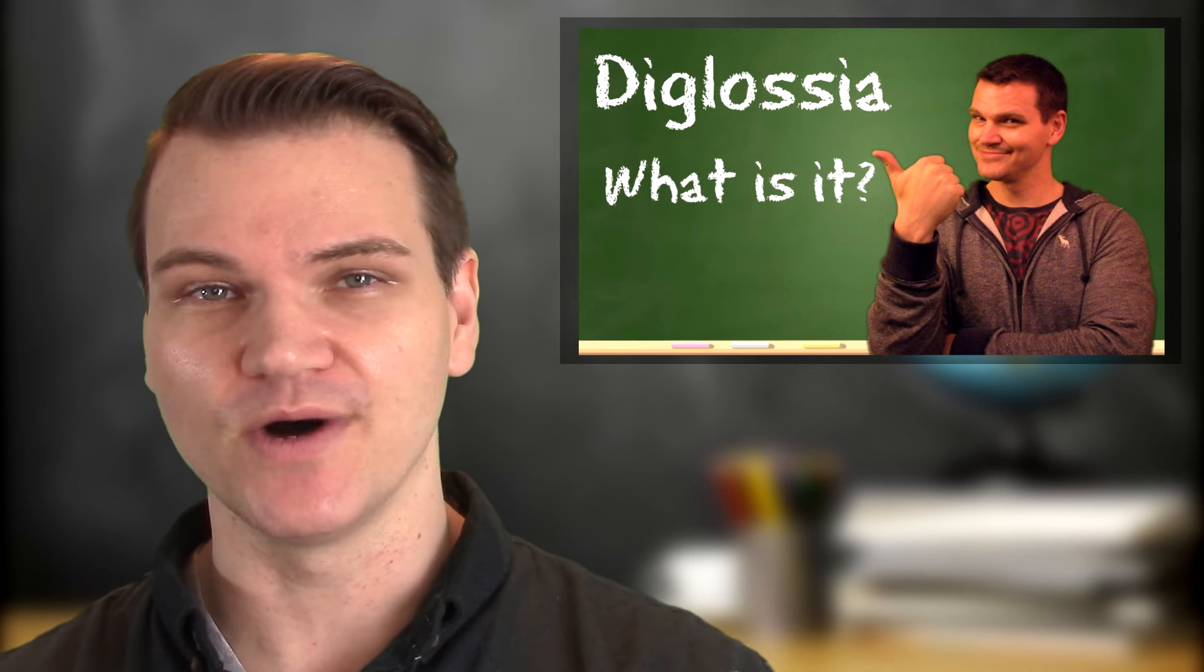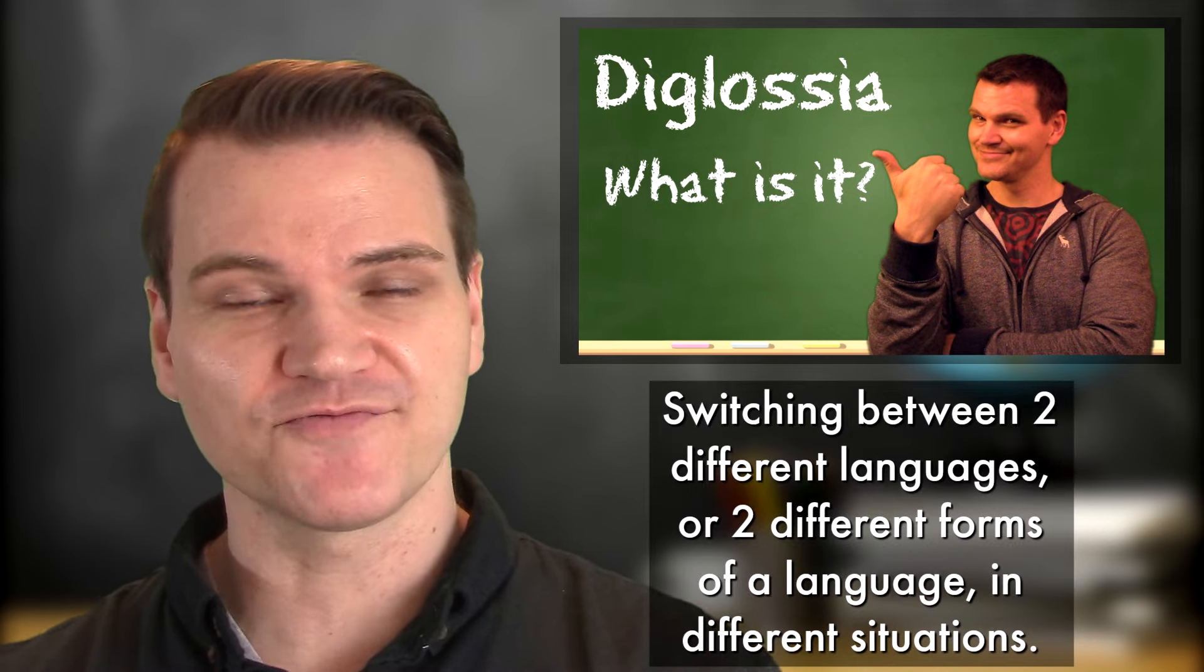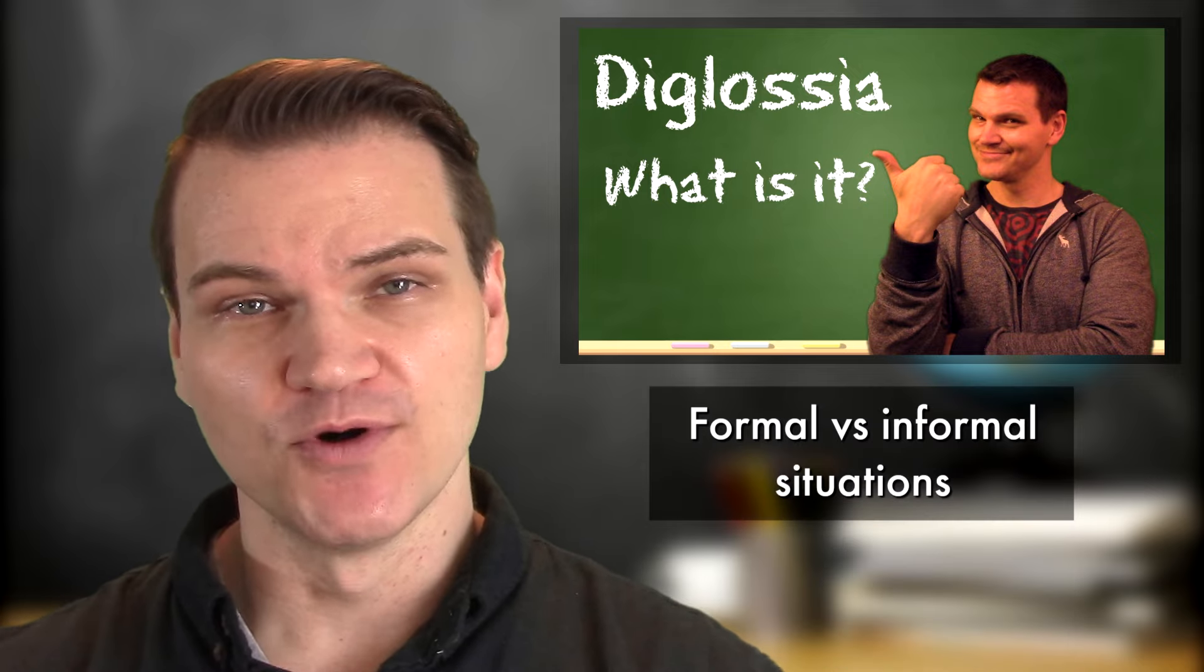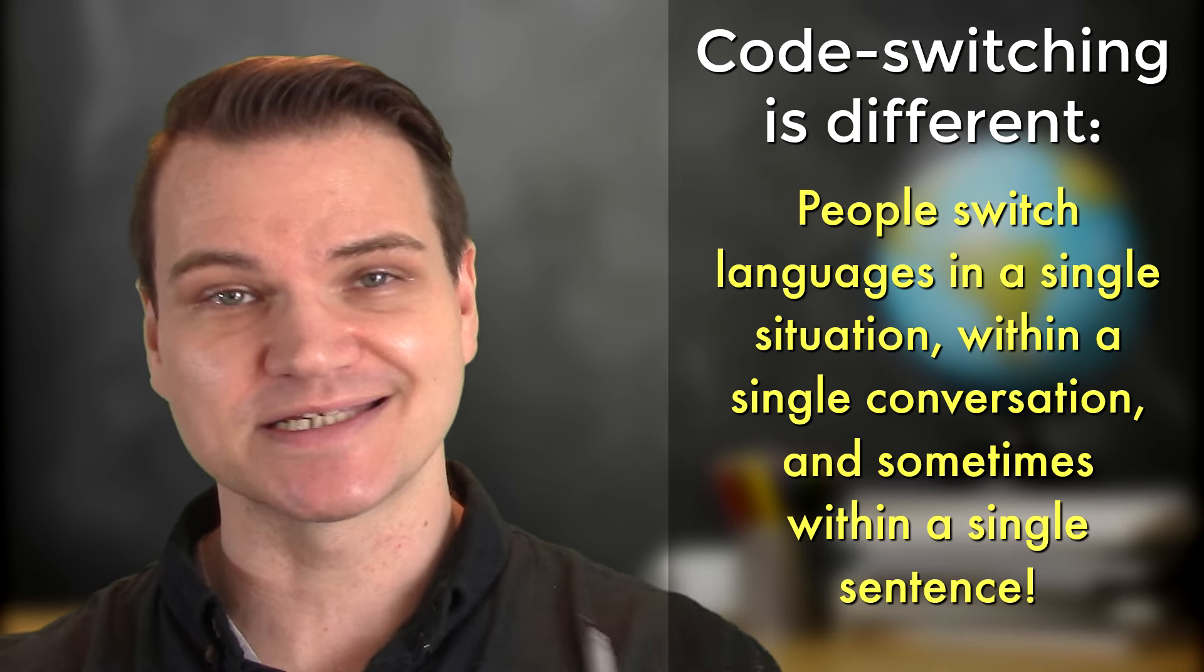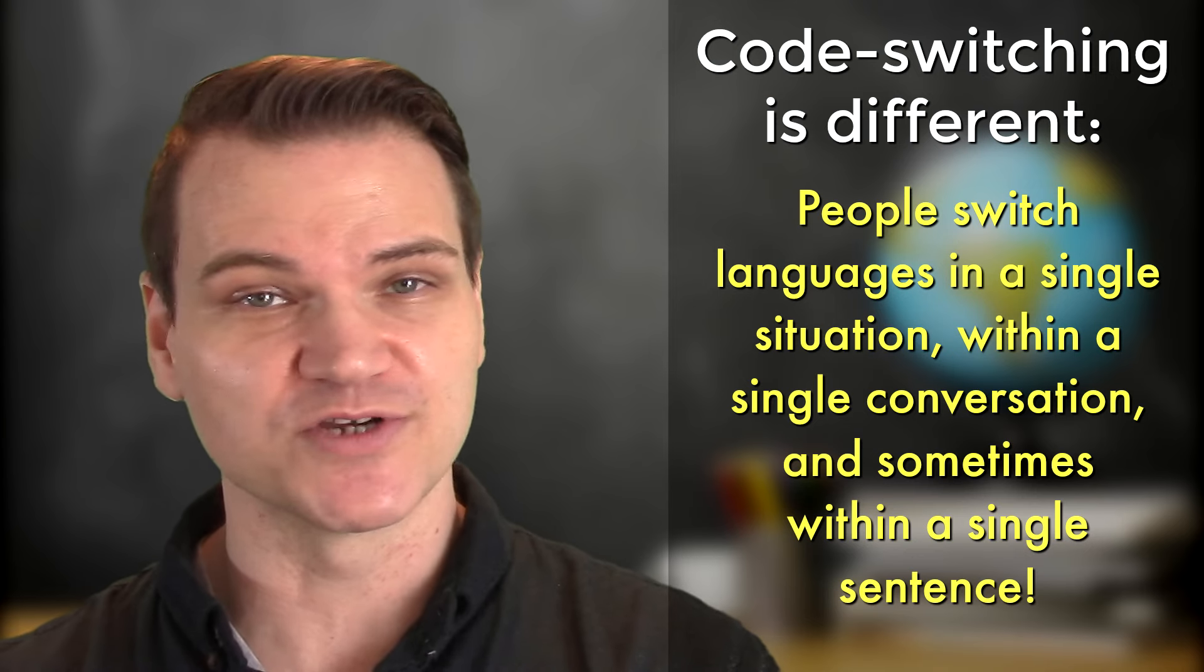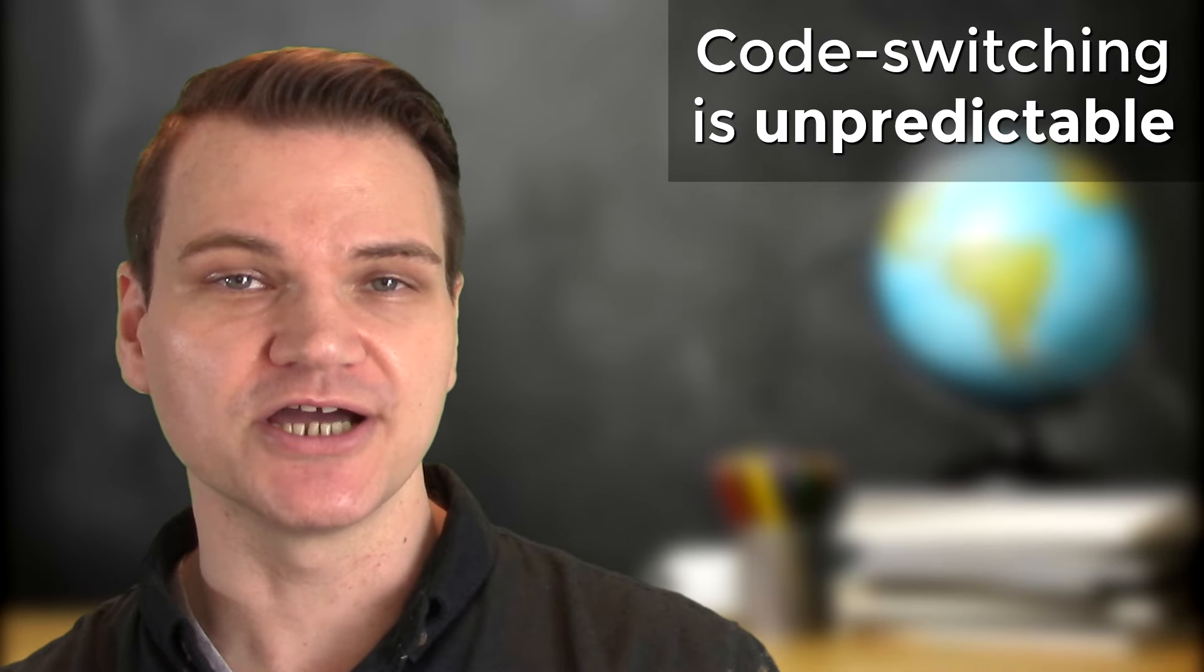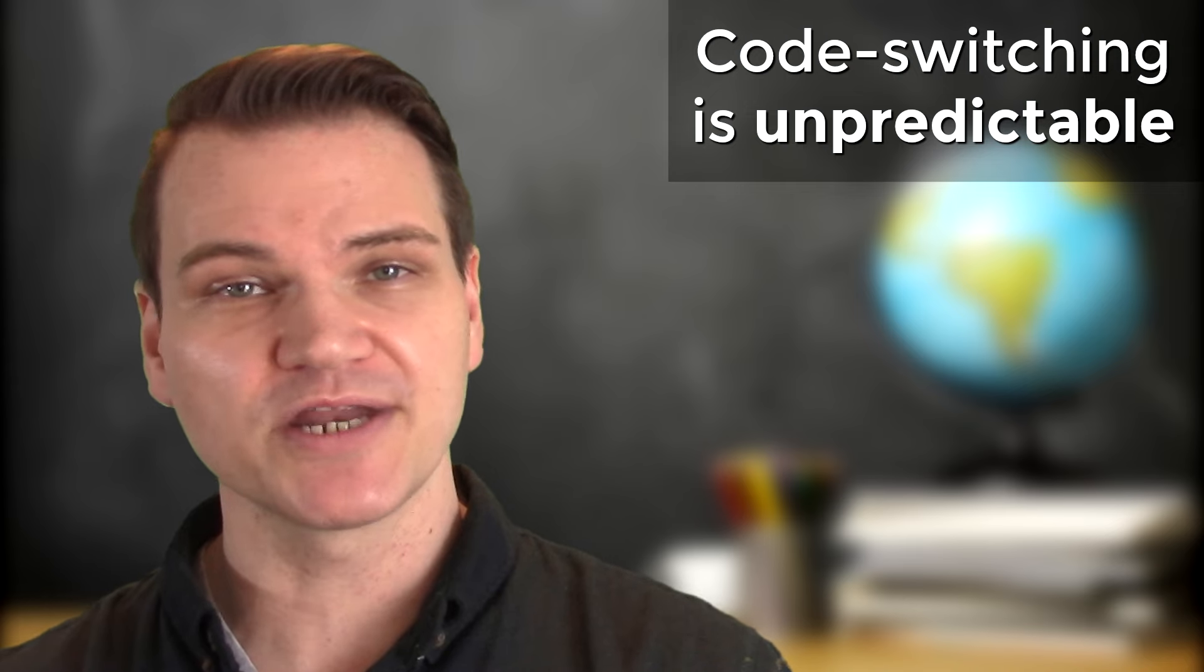You may have seen my earlier video on diglossia which means switching between two different languages or two different forms of a language in different situations. For example, formal versus informal situations. Code switching is different in that people switch languages in a single situation within a single conversation and sometimes within a single sentence. Code switching is largely unpredictable and speakers often impulsively switch languages without any conscious choice.